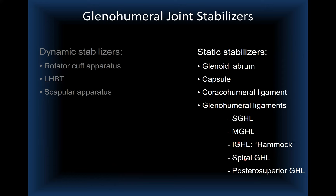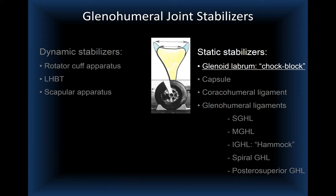The best analogy for the labrum is a chock block holding a tire of a small airplane in place. The labrum is a rim of fibrocartilaginous tissue that increases the depth of the otherwise shallow glenoid fossa by about 50%, and also increases the contact area of the small glenoid with respect to the larger humeral head.